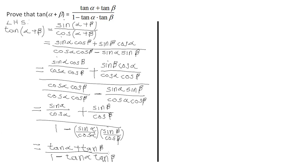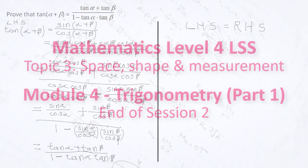Using the reciprocal identity, sin α/cos α = tan α and sin β/cos β = tan β. So we get (tan α + tan β)/(1 − tan α · tan β). We have now proved it. We end by stating: therefore LHS = RHS. Note that we have not juggled the two sides — we have properly proved the identity.